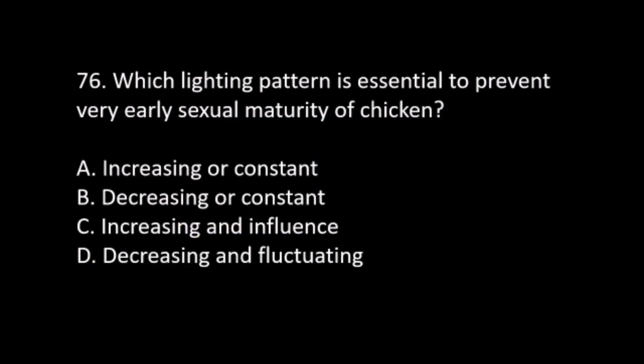Number 76. Which lighting pattern is essential to prevent very early sexual maturity of chicken? A. Increasing or constant. B. Decreasing or constant. C. Increasing in influence. D. Decreasing and fluctuating. The answer is A. Increasing or constant.